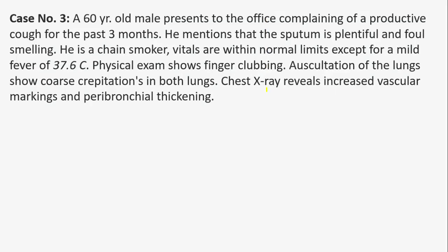Case number three: a 60-year-old male presents with a productive cough for three months. The sputum is plentiful and foul-smelling. He is a chain smoker. Vitals are within normal limits except for a mild fever of 37.6°C. Physical exam shows finger clubbing — bronchiectasis is one of the diseases associated with clubbing. Auscultation reveals coarse crepitations in both lungs. Chest X-ray reveals increased vascular markings and peribronchial thickening. On CT, the bronchial walls are thickened with the bronchus diameter 1.5 times the diameter of the accompanying artery.